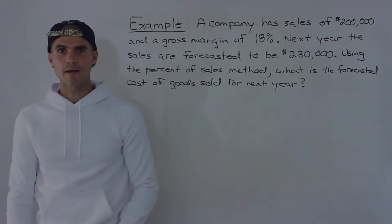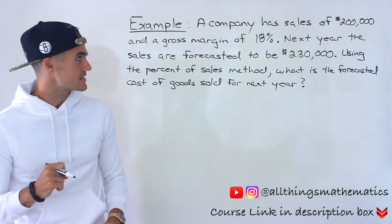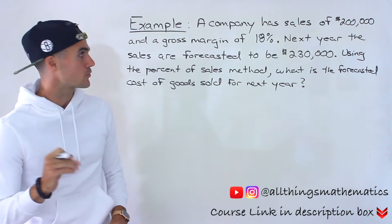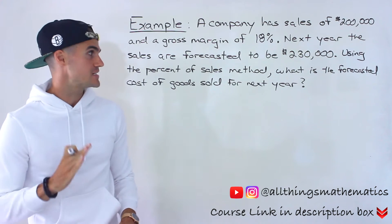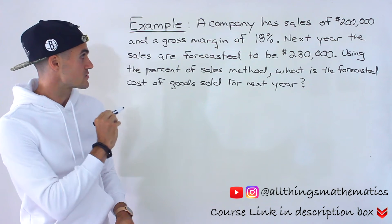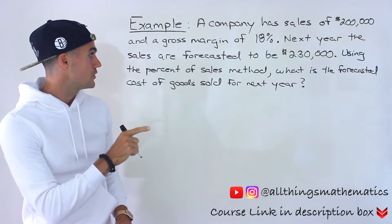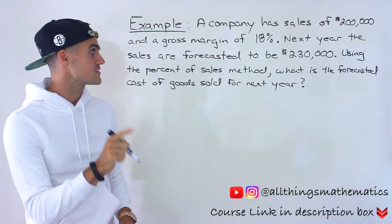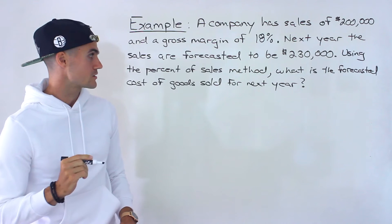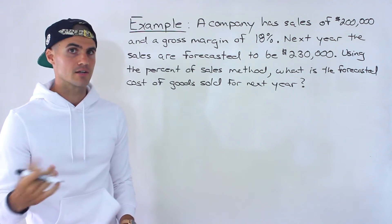Welcome back, Patrick here. Moving on to the next example. A company has sales of $200,000 and a gross margin of 18%. Next year the sales are forecasted to be $230,000. Using the percent of sales method, what is the forecasted cost of goods sold for next year?